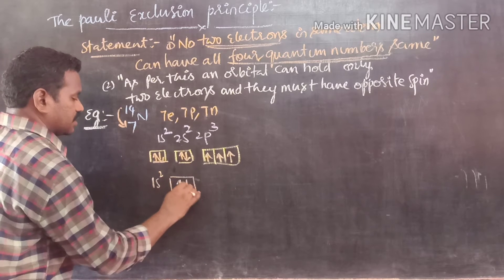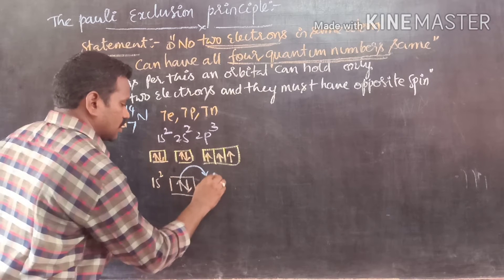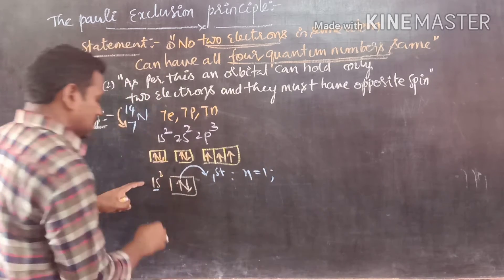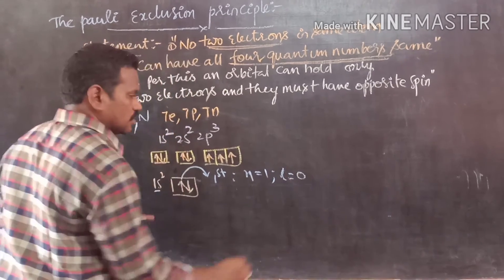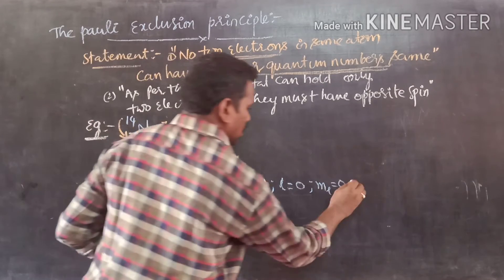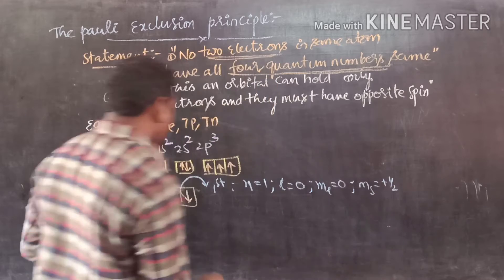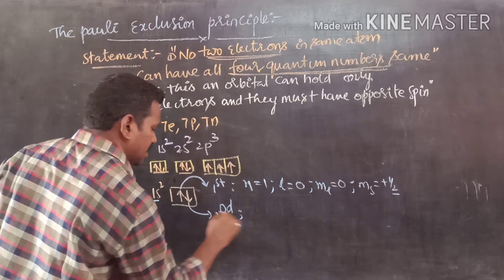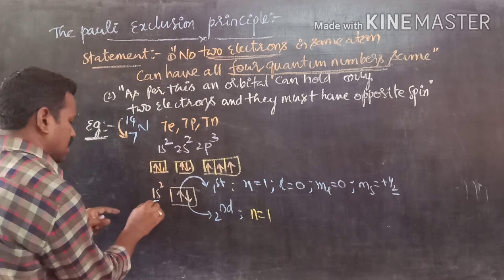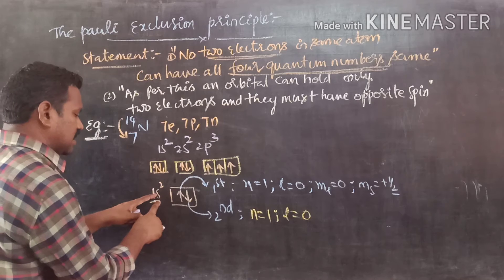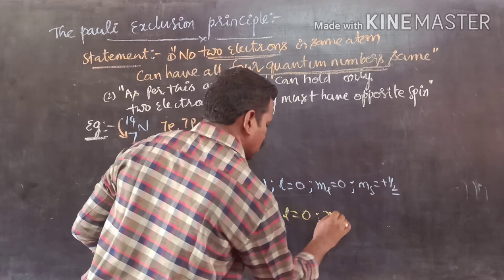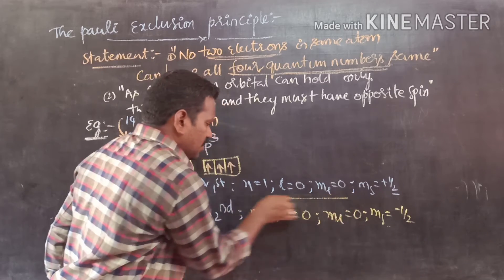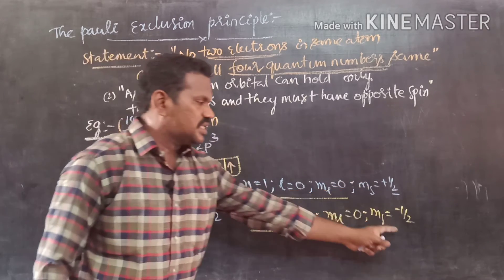For the first electron of 1s: n = 1, l = 0 (since it is s sublevel), ml = 0, and ms = +½ (because the first electron is in the upward/clockwise direction). For the second electron of 1s: n = 1, l = 0, ml = 0, and ms = −½. Observing these, the first three quantum numbers are the same, but there is a difference in the fourth quantum number.